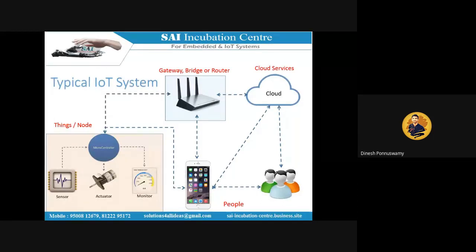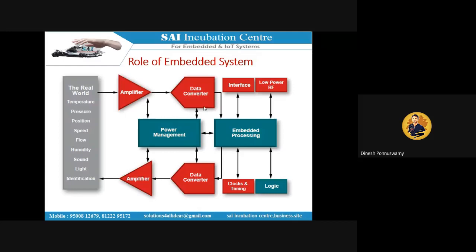We need to understand the internal layers of IoT architecture to know where blockchain fits in. The role of embedded systems is key: they fetch and process sensor data, make decisions based on thresholds — for example, if temperature exceeds 35 degrees Celsius, turn on the air conditioner; if it drops below 35, turn it off.